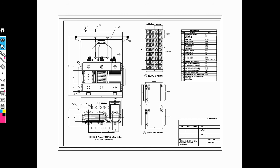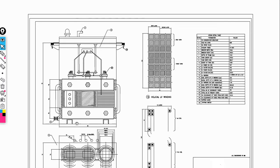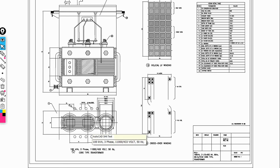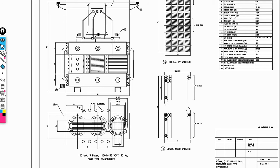Now, here we need the exact rating — that is, what is the rating of the three-phase transformer? This is a 100 kVA three-phase transformer, and it is a step-down transformer, in which the input voltage is greater than the output voltage. Its frequency is 50 Hz.